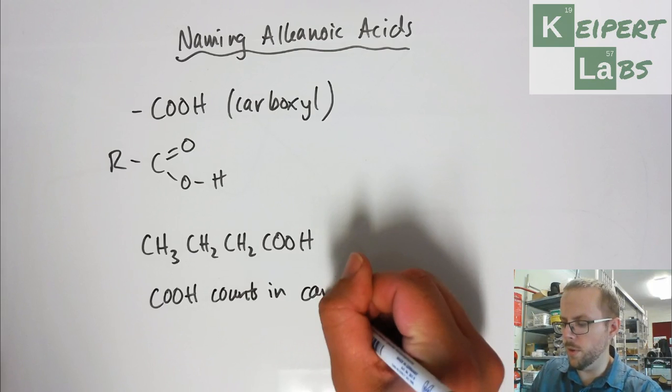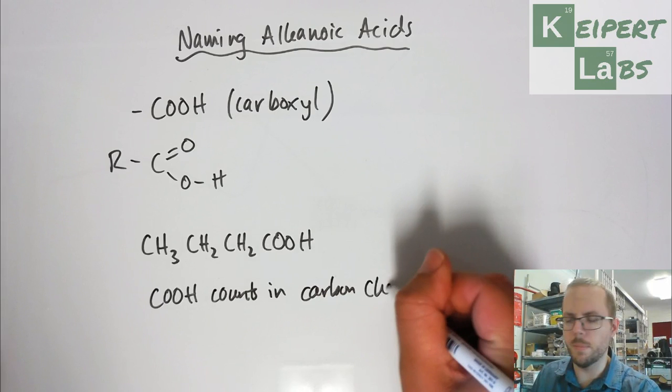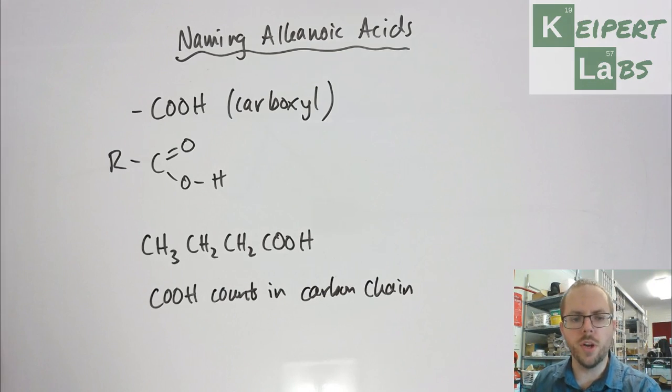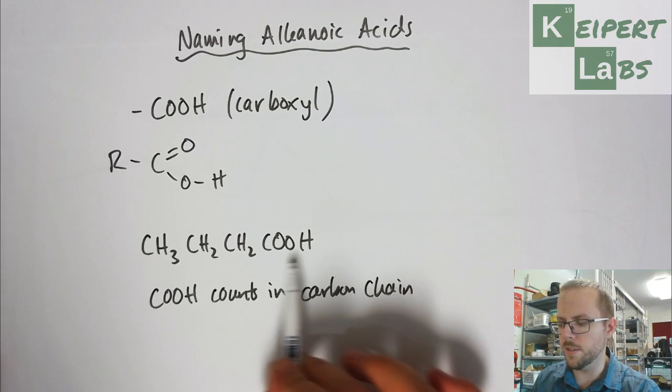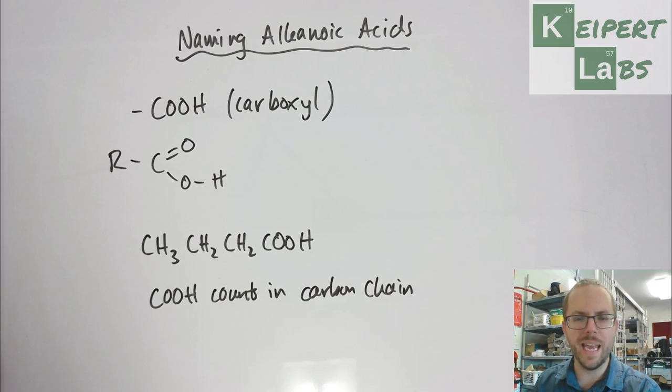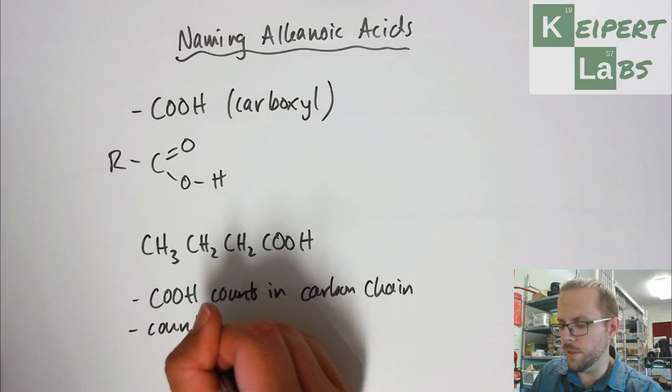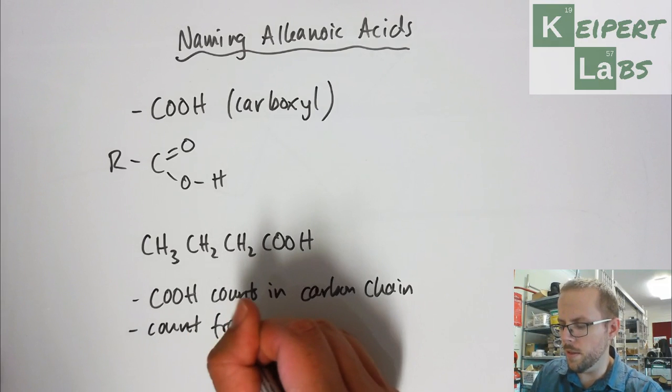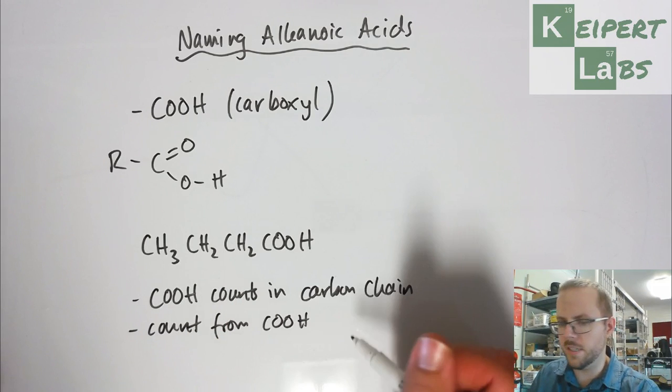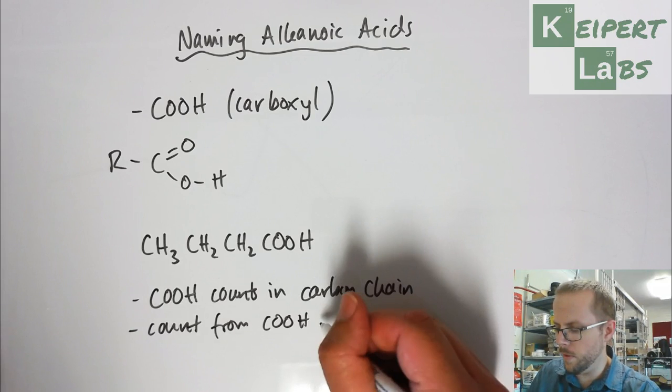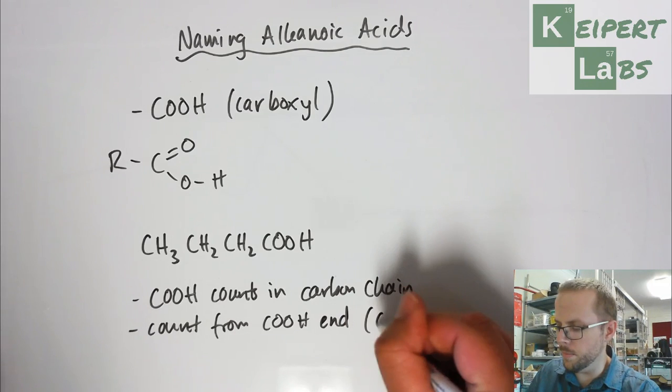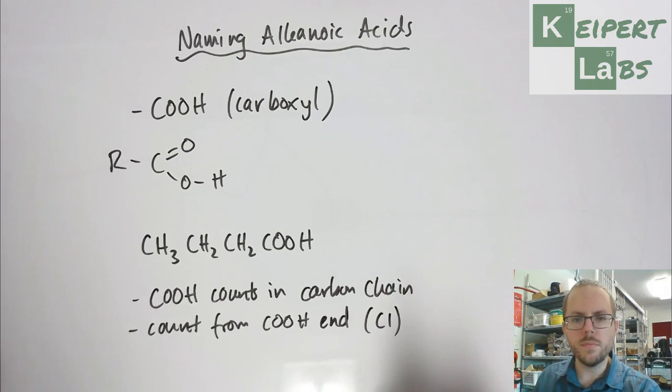With naming hydrocarbons, you have to consider the longest possible carbon chain, and the COOH group as the functional group must be part of what we count. The second thing we need to be aware of is that we count from the end that has the COOH group. That is, it becomes carbon number one.